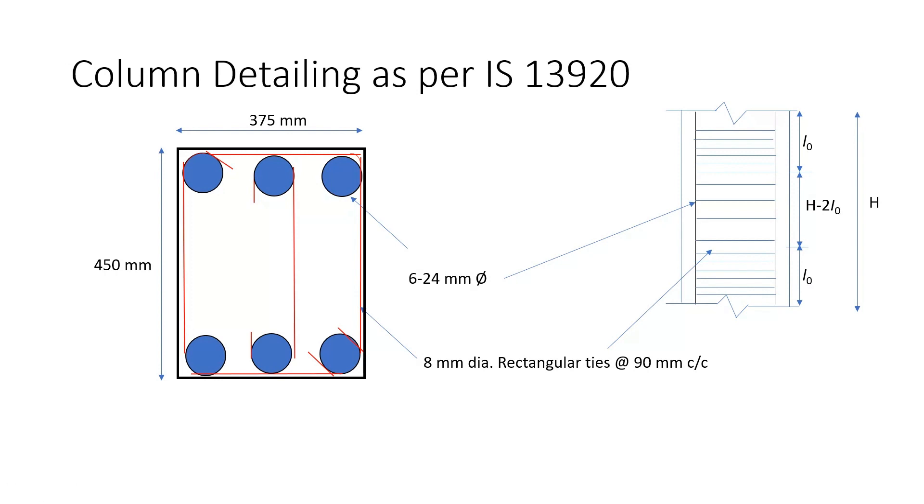So what the code says is that if you have a column like this of height h then near the beam column junction up to a length of L0.